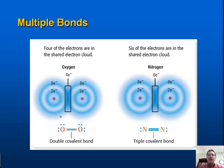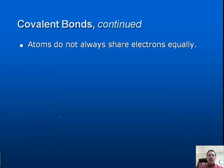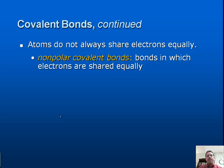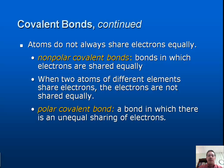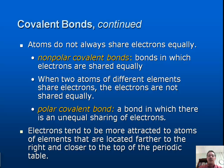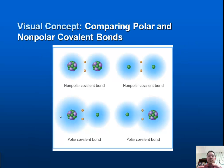Atoms do not always share electrons equally. Nonpolar covalent bonds share electrons equally. When two or more atoms of different elements share electrons, the electrons are not shared equally — this is a polar covalent bond. When two different bonded atoms have different attractions for electrons, we find the electrons more on one atom. We call that tendency to attract electrons electronegativity.